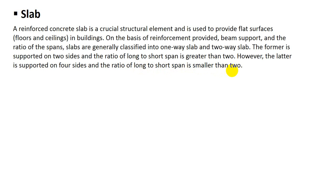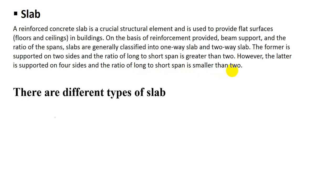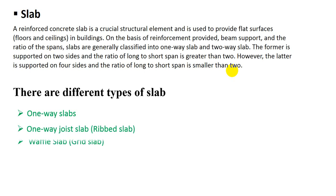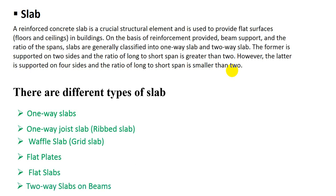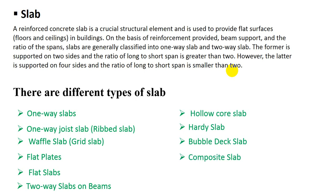So this is the main criteria and definition of slab. Now, the different types of slab are: one-way slab, one-way joist slab (ribbed slab), waffle slab, rigid slab, flat slab, flat plates, two-way slab on beams, hollow core slab, hardy slab, bubble deck slab, composite slab, precast slab, and slab on grade.